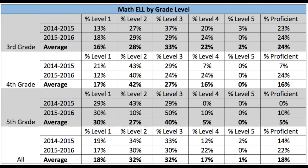The math data for ELL students by grade level shows that in 3rd grade, students at a level 5 went from 3% to 0%, with little overall growth between the two years. 4th grade proficiency rose 17%, with the majority of students at a level 2. 5th grade proficiency went from 0% to 10%, and 50% of 5th graders were at a level 3 in 2015-16 compared to 29% the year before. Overall proficiency rose 8%, with most students performing at levels 2 and 3.